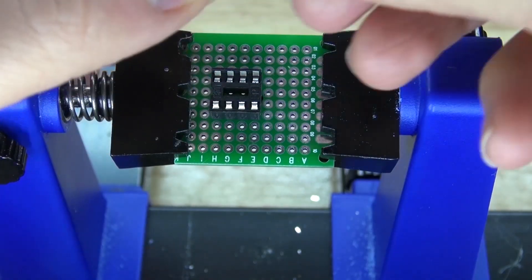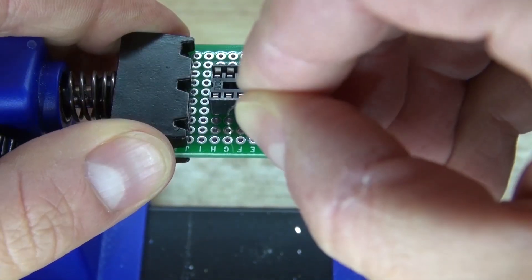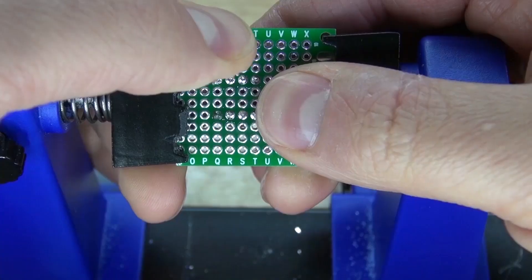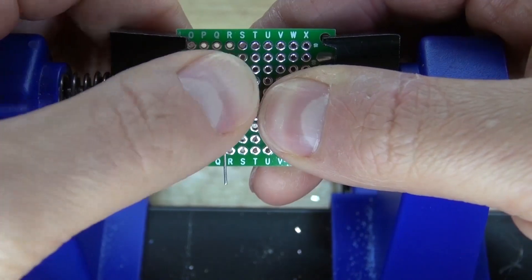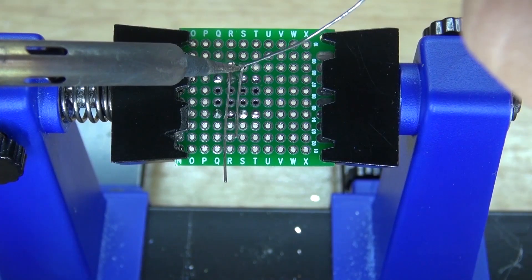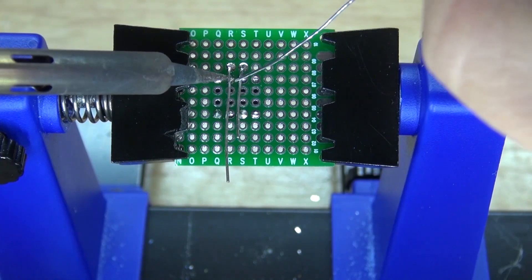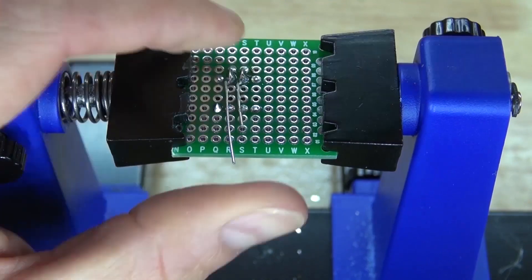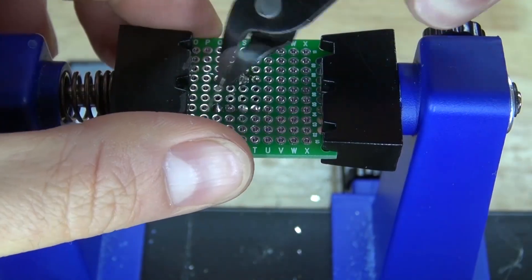Next you're going to need to take your 220 ohm resistor and place it onto pin 2 and 3. Bend the leads over, solder bridge it together, cut off the leads, and it should look just like this.